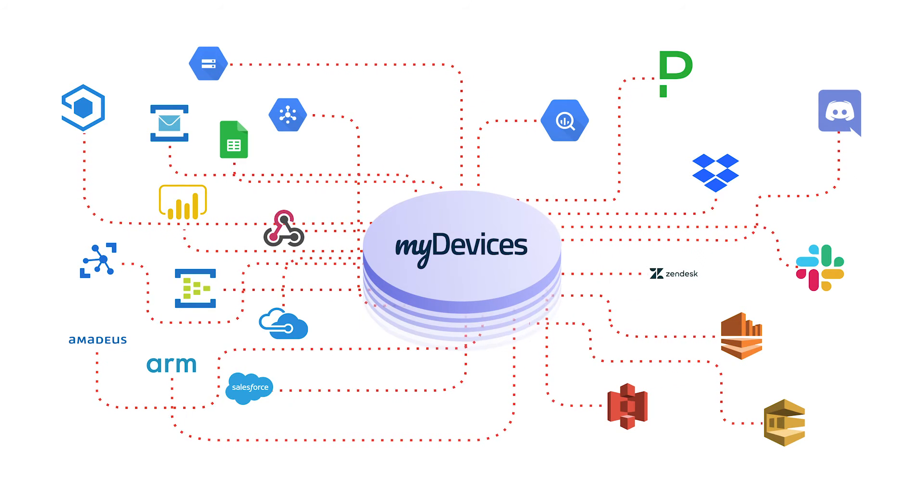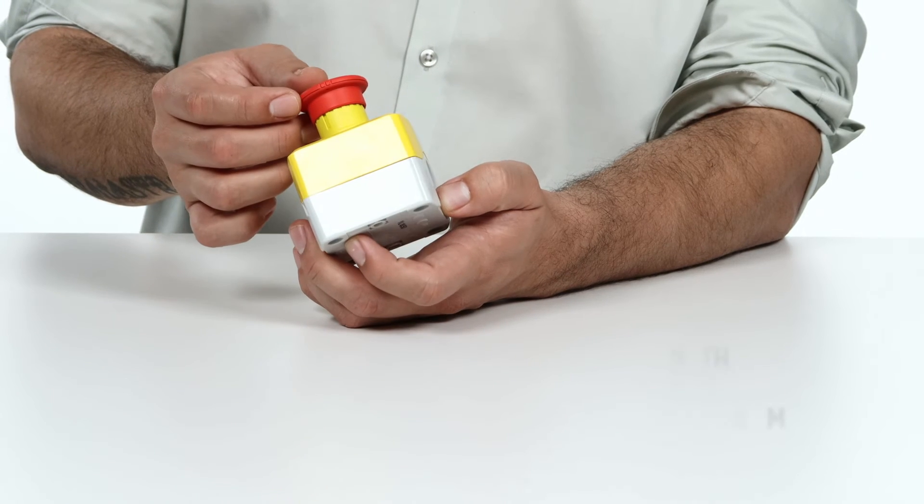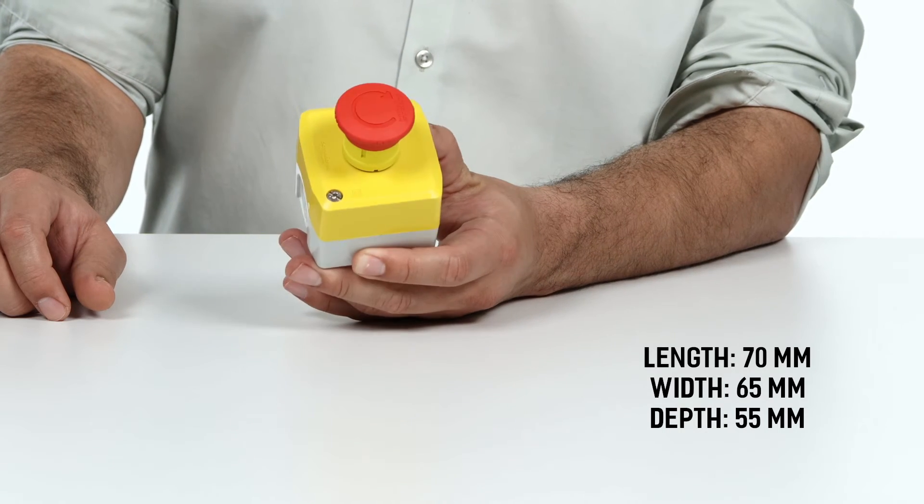The data types for this device include count by button and number of times pressed. The device has a length of 70 millimeters, a width of 65 millimeters, and a depth of 55 millimeters.